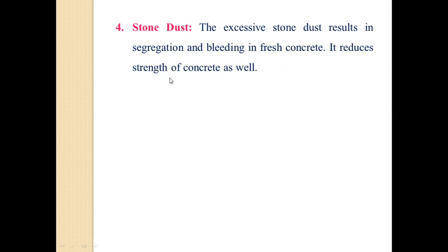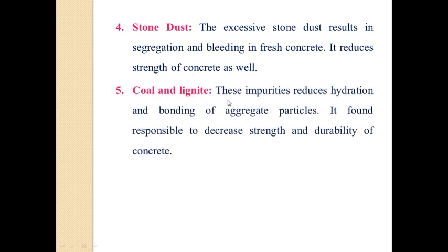Segregation means the paste and aggregate are separated from each other, and bleeding means cement paste rises to the surface of concrete. If stone dust is present in excess, it also reduces the strength of concrete. Coal and lignite impurities reduce hydration and bonding of aggregate particles, and are responsible for decreasing the strength and durability of concrete.